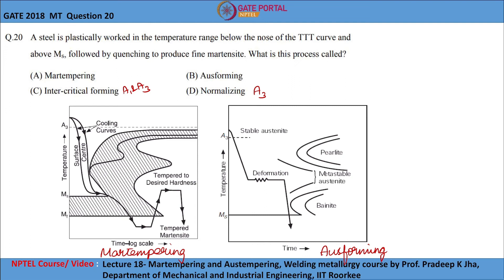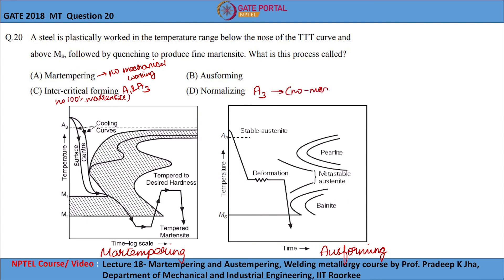Option D is also not correct. Martempering does not involve any mechanical working, and intercritical forming will not produce 100% martensite. Normalizing also does not involve any mechanical working. Therefore, the correct answer for this question is option B, that is ausforming. Thank you.